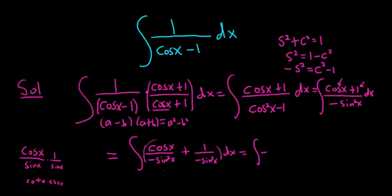So this piece here becomes negative cotangent x cosecant x. And then this negative comes upstairs, so minus 1 over sine squared is cosecant squared x. And then parenthesis dx.